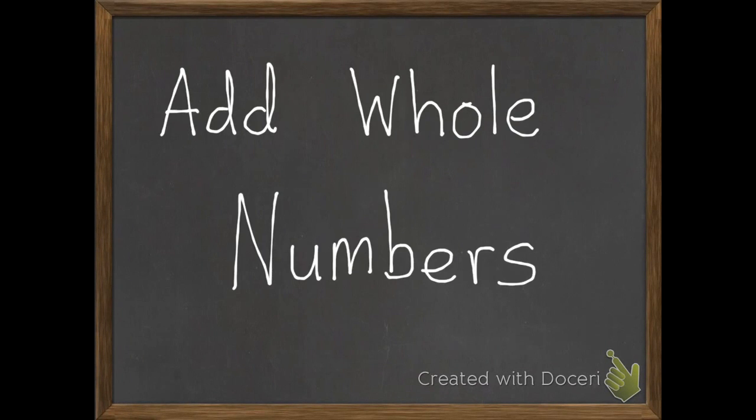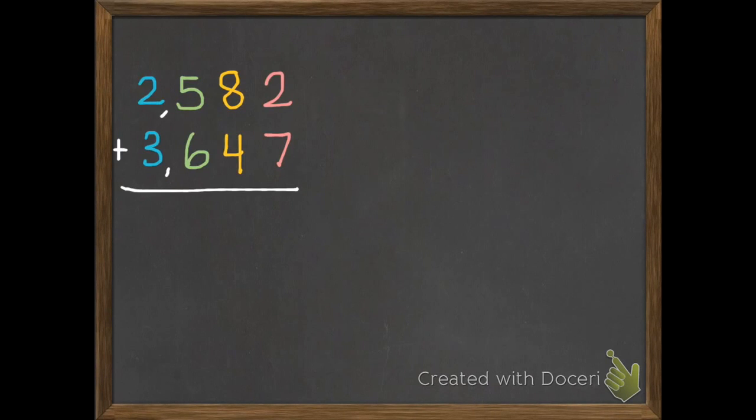Today we are going to add whole numbers. Here's my first example. Whenever we are adding, it's important that we keep everything lined up. I'm going to even add these lines right here, that our ones are in the same column, the tens, the hundreds, the thousands, and so on, that everything's lined up.